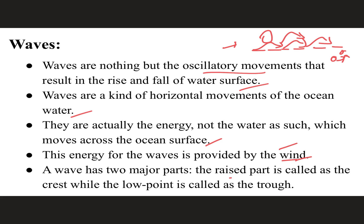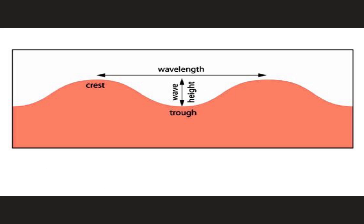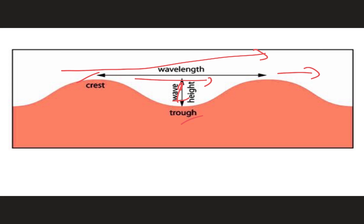A wave has two major parts. The raised part is called the crest, while the low point is called the trough. The highest part is the crest and the lowest part is the trough. The distance between them relates to the wavelength. This can be seen in a pictorial representation showing the oceanic floor and ocean surface.